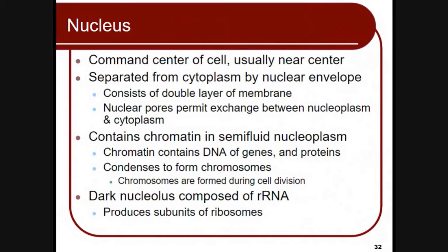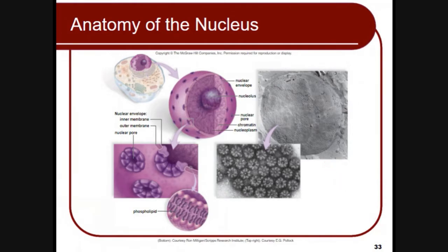The nucleus is the command center of the cell, usually near the center, and is separated from the cytoplasm and other organelles by a nuclear envelope consisting of a layer of membrane. Nuclear pores permit the exchange between nucleoplasm and cytoplasm. The nucleus contains chromatin, which is a semi-fluid nucleoplasm containing DNA of genes and proteins. Chromatin condenses to form chromosomes during cell division. The dark nucleolus is composed of ribosomal RNA and produces the subunits of ribosomes.